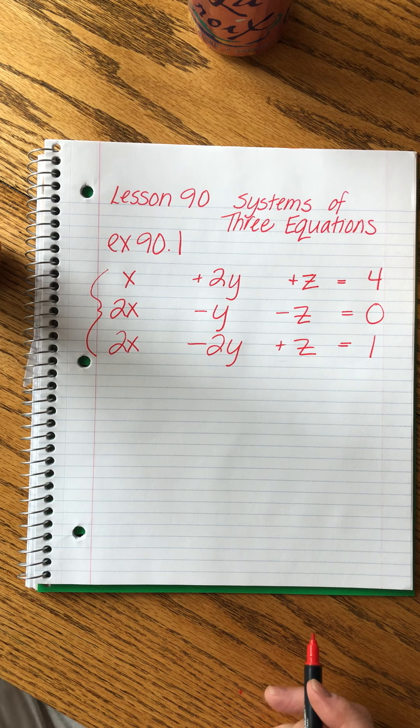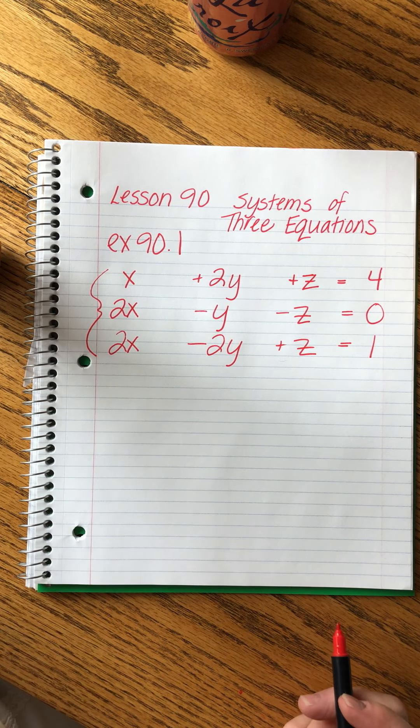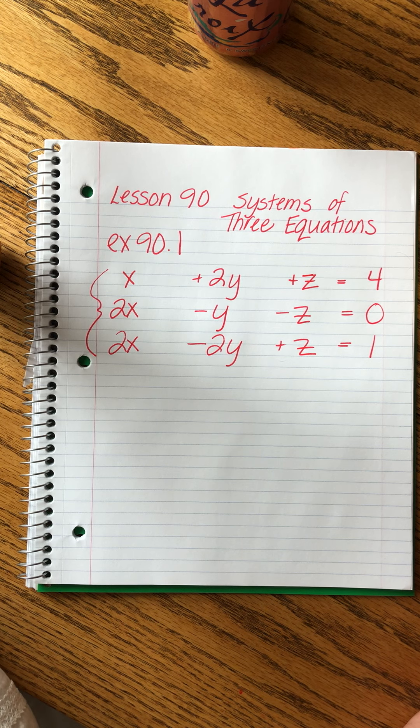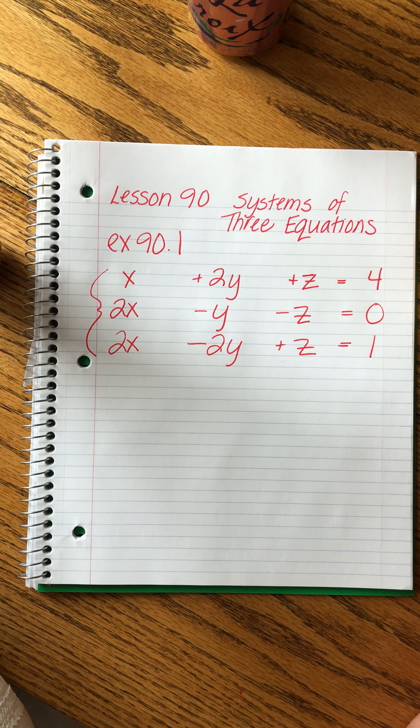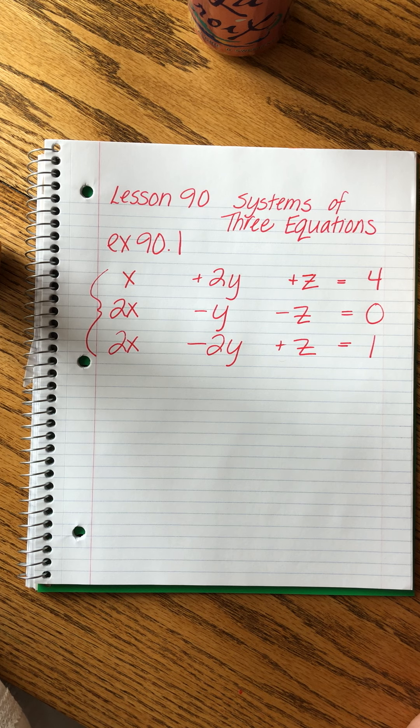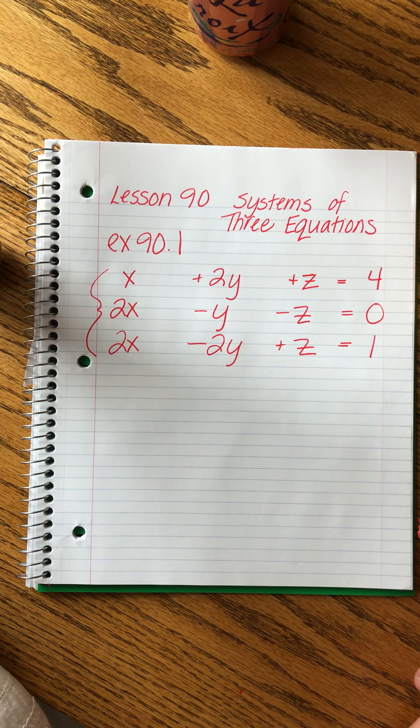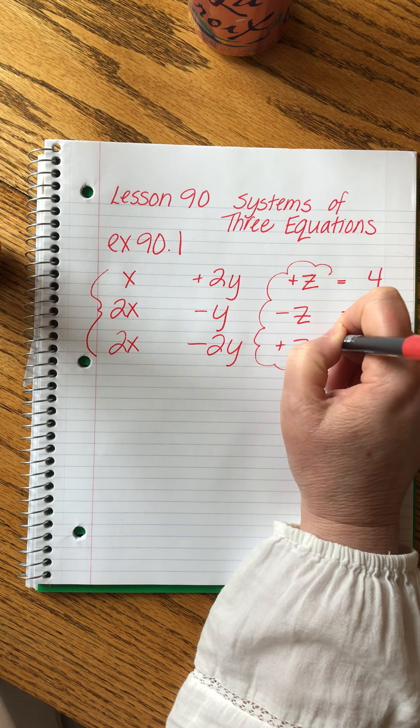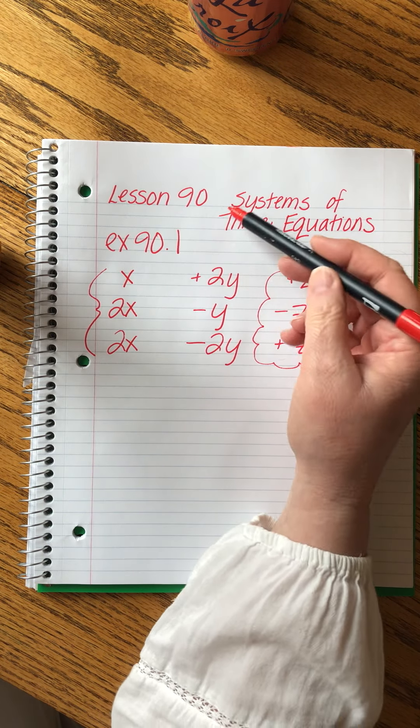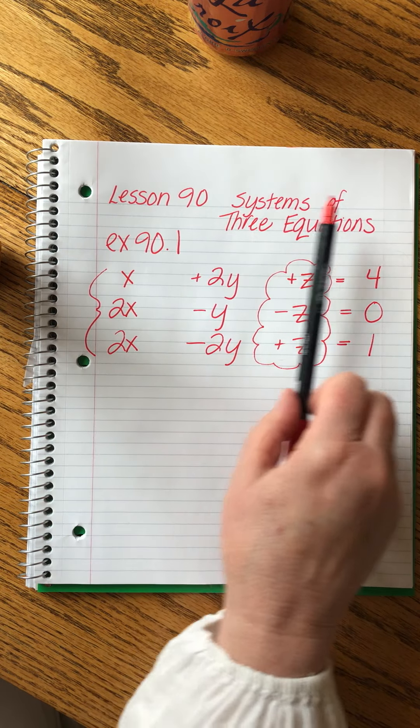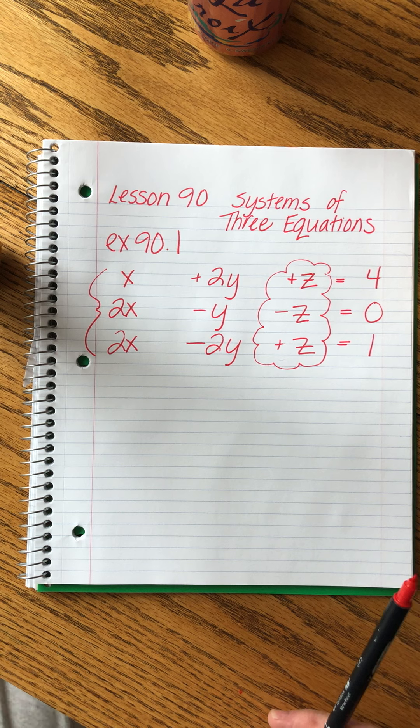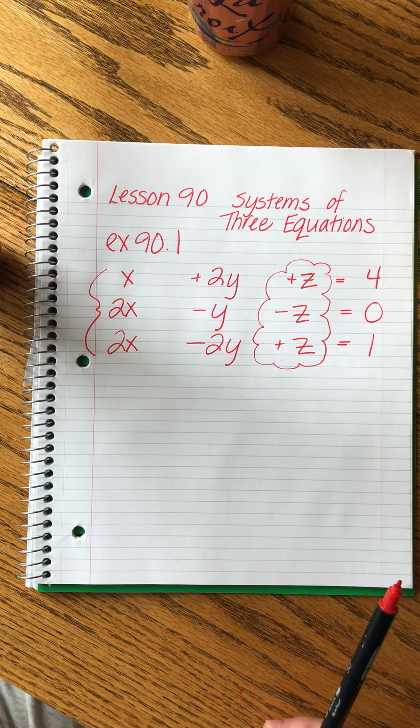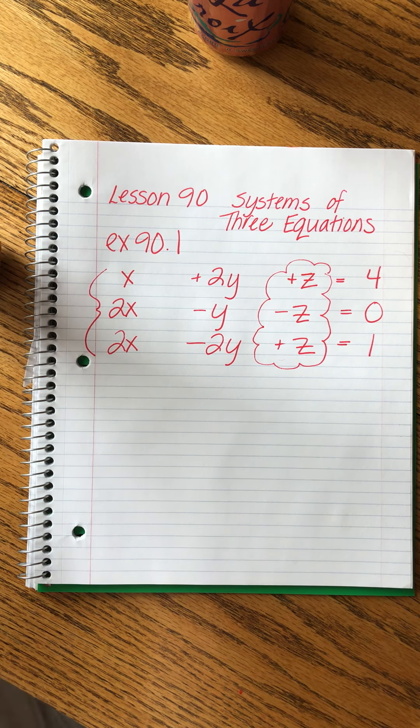There is our system of equations. What we're looking to do is find a value for x and y and z that will make all three of these equations true. That's our goal. And in order to do that, we are looking, especially at first, to use elimination. And what catches our attention are these z's. What I do is I look down the columns of matching letters. That's why it's important to set them up very neatly so that I can kind of look at them without a lot of visual clutter.